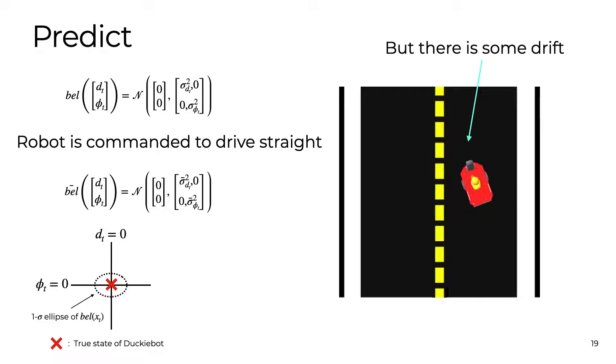Shown in the bottom left is a graph where the distance from the center of the lane on the vertical axis and the angle relative to the lane on the horizontal axis. The level curve of a Gaussian is always an ellipse. Here we show the one sigma level curve to represent our uncertainty in the phi-d plane.